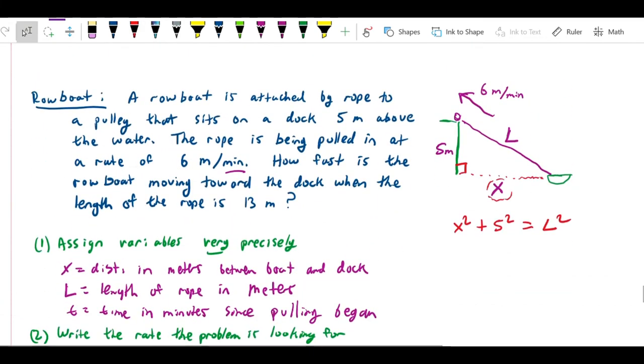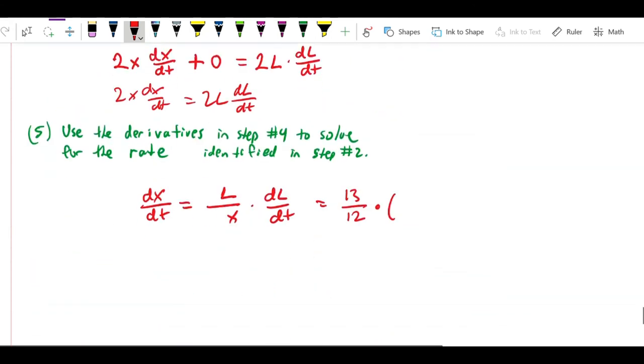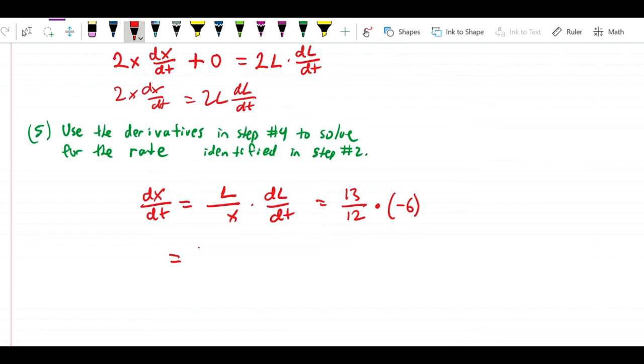So, we're asked in the problem, how fast is the rowboat moving toward the dock when the length of the rope is 13 meters? So, what that tells us is that L, the length is 13 meters. We're not given x. We're going to need x in the equation that we found. But since this is a right triangle, we can easily see that x is equal to the square root of L squared minus 5 squared. And we don't really have to do that because I think that many of you know from geometry that one of the Pythagorean triples is 5, 12, 13. So, that means that this is going to be the length, which is 13, over 12. And we found before that dL/dt is negative 6. So, that's negative 6. That comes out to negative 13 over 2, which is negative 6.5 meters per minute.